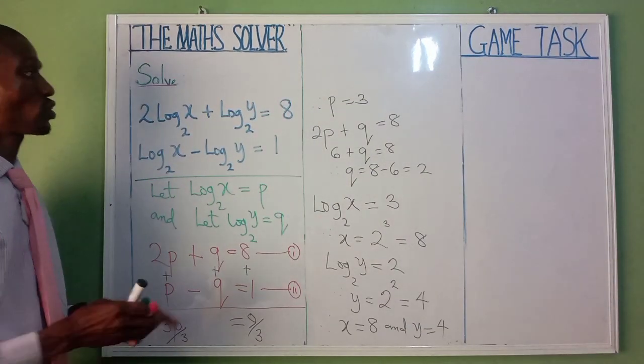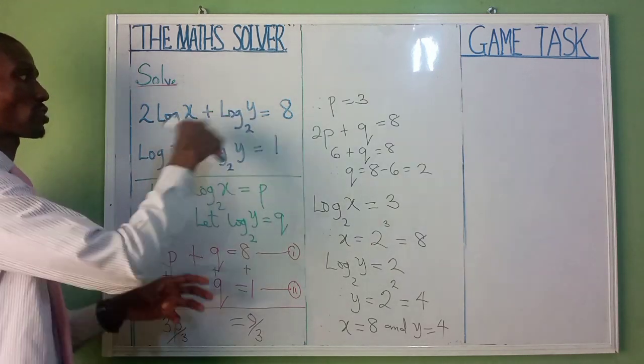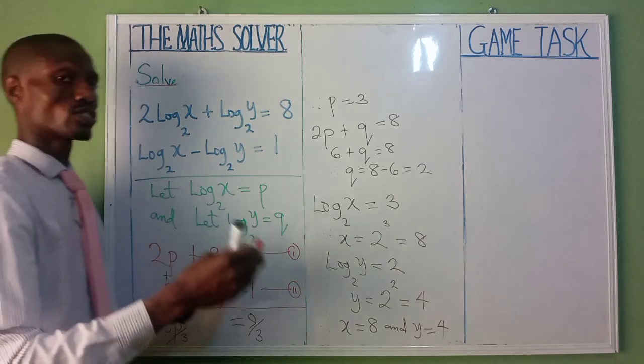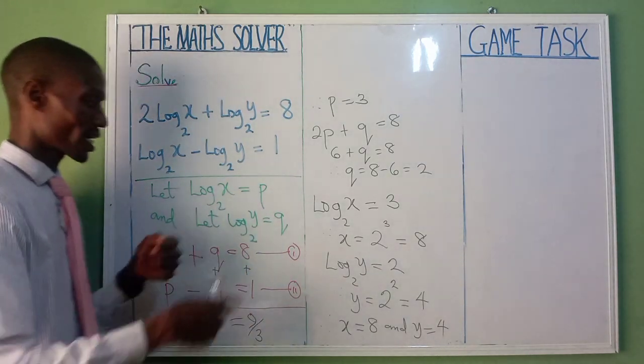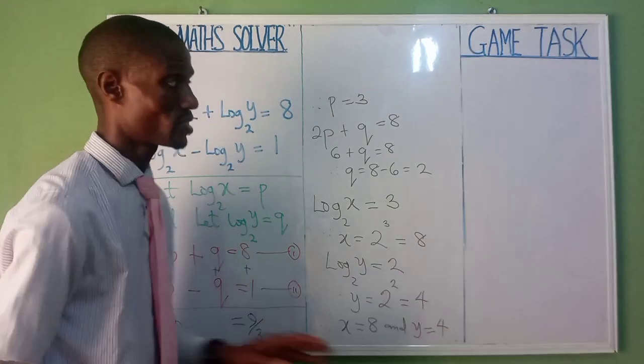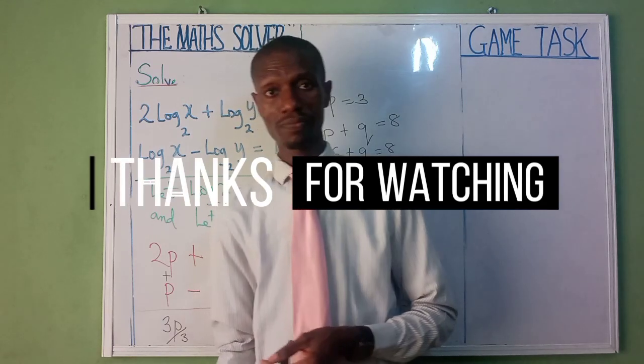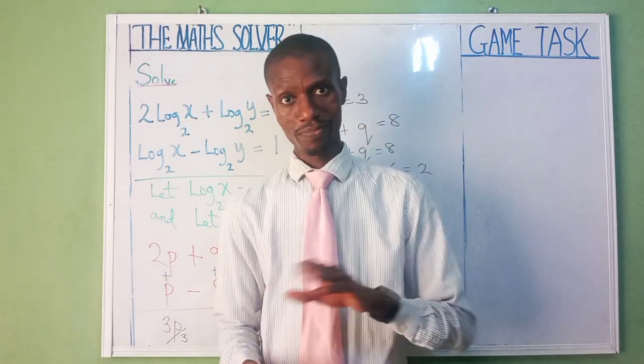It's as simple as that. You just use a letter to represent your log, substitute it back. It leads to a simultaneous equation. The moment you're through with the simultaneous equation, you return it back to where you started from, and you get your x and y. Thank you very much for watching. Please take care of yourself and subscribe to the channel. Bye-bye.